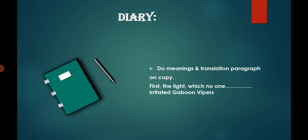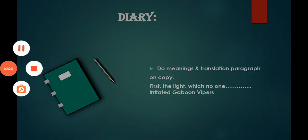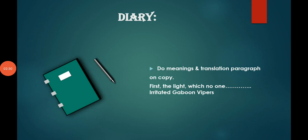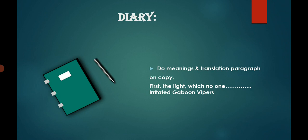And here is your homework also. You have to check your book, page number 119, which is your chapter. You will see the paragraph start — the third paragraph, I guess. Starting with 'the light which no one.' You have to translate it in your copies, and then you all have to write meanings also. It's your homework. And that's all for now. Our chapter is completed.